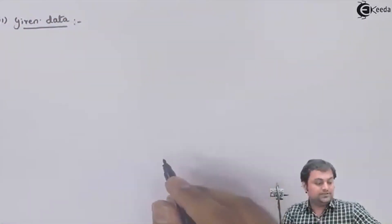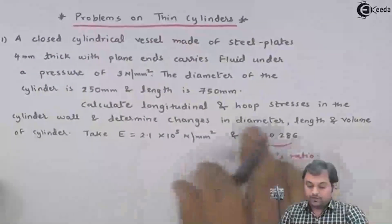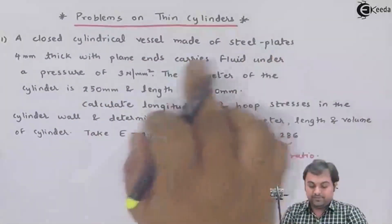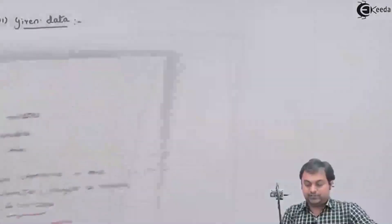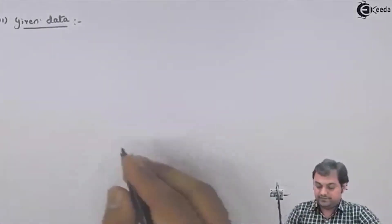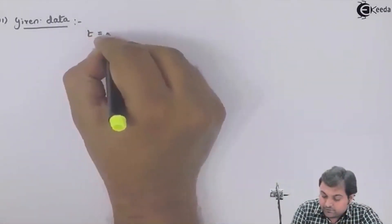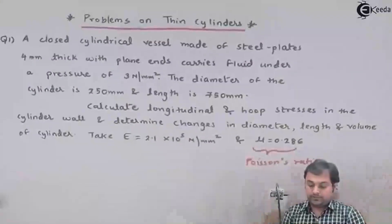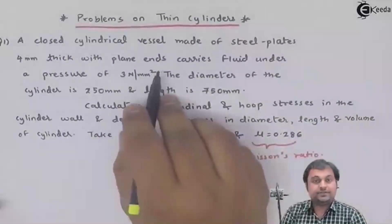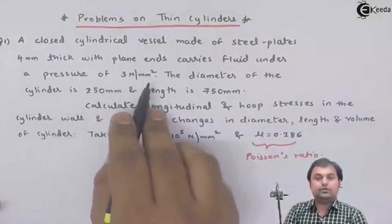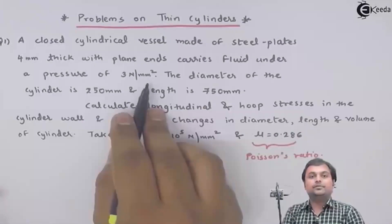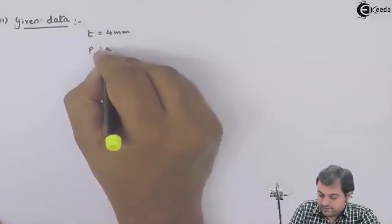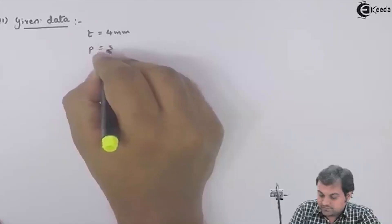From the problem we extract the data. Thickness t = 4 mm. Internal pressure P = 3 Newton per mm squared. Diameter d = 250 mm, length L = 750 mm. Young's modulus E = 2.1 × 10⁵ Newton per mm squared. Poisson's ratio mu = 0.286. We need to find: longitudinal stress, hoop stress, change in diameter (delta D), change in length (delta L), and change in volume.